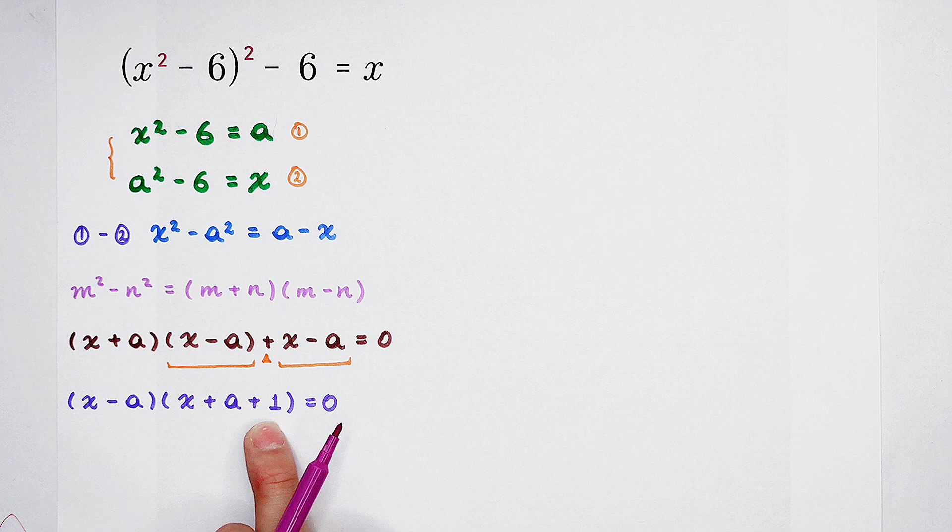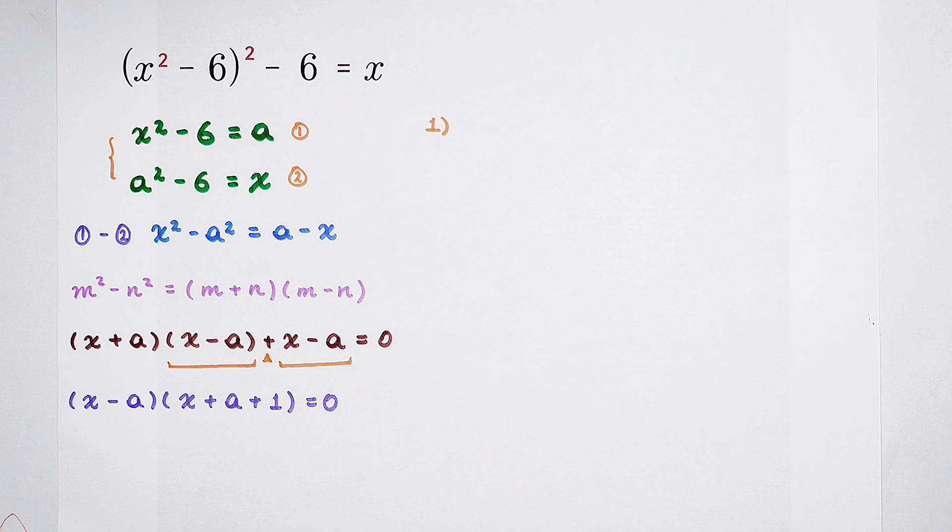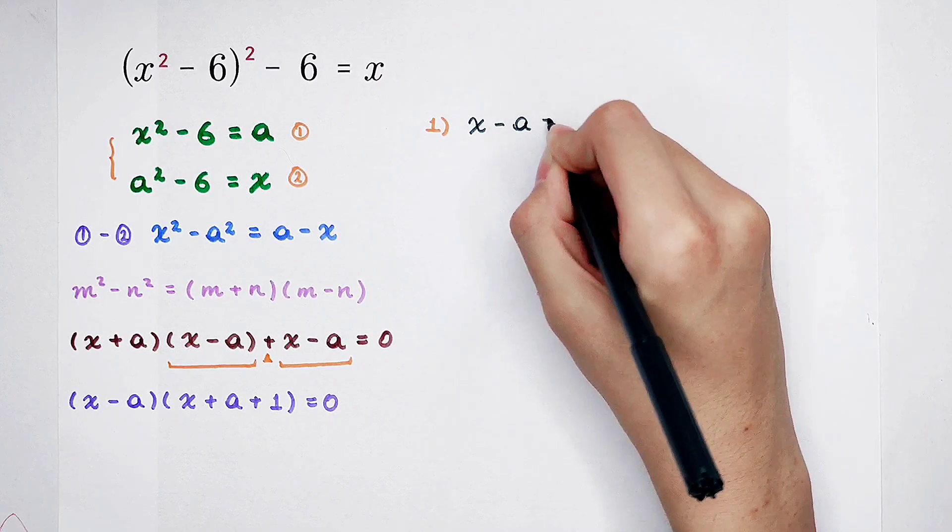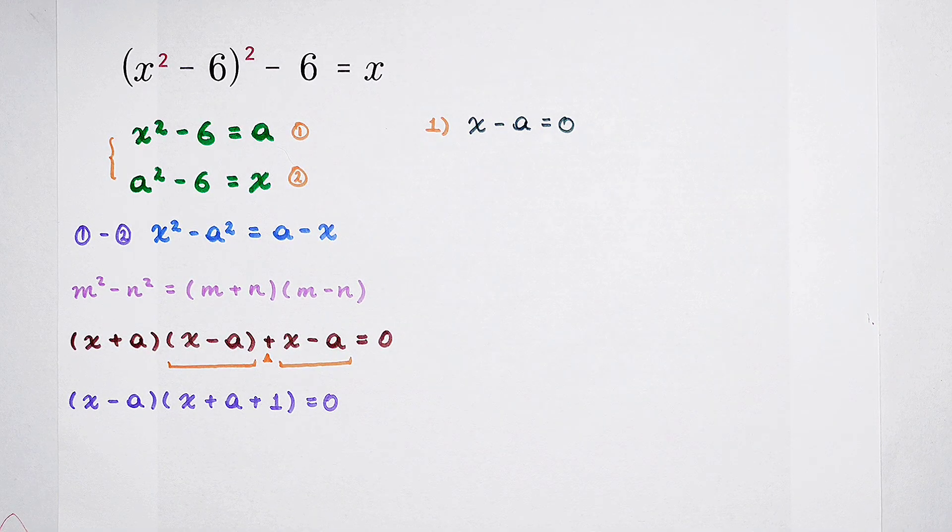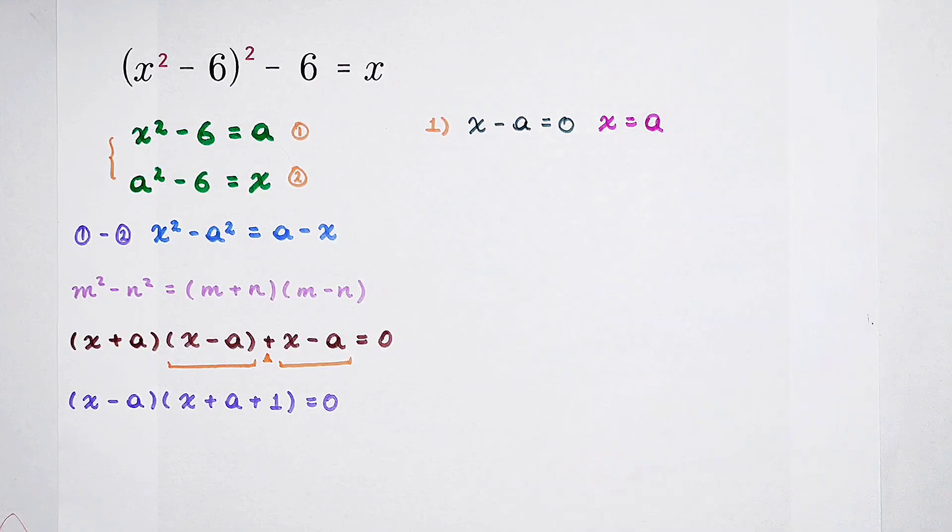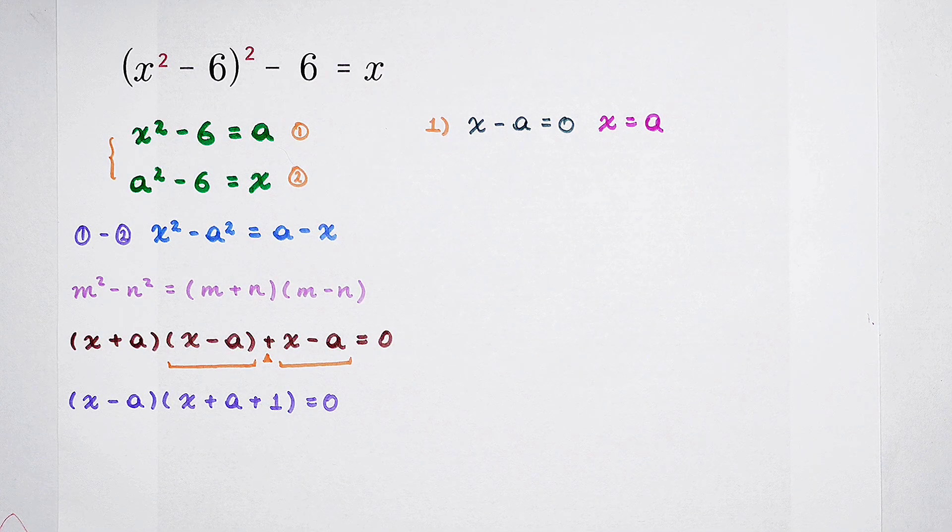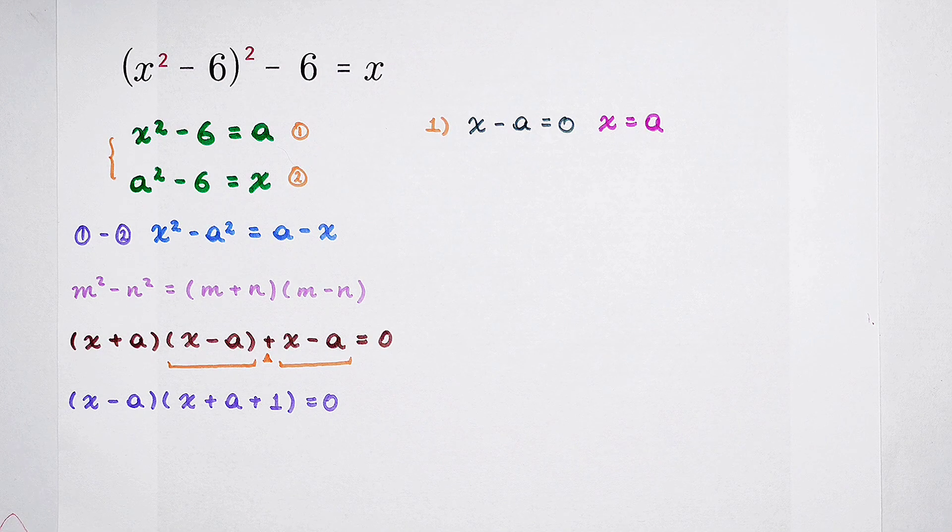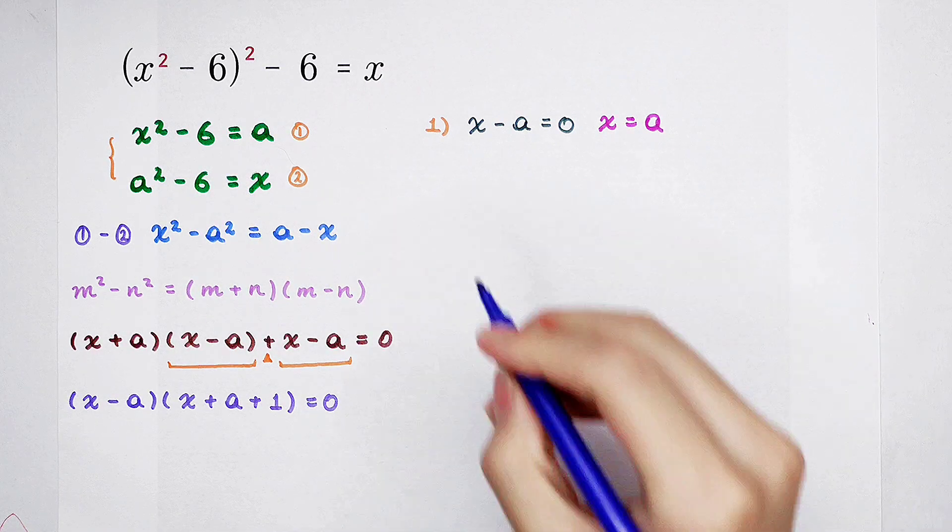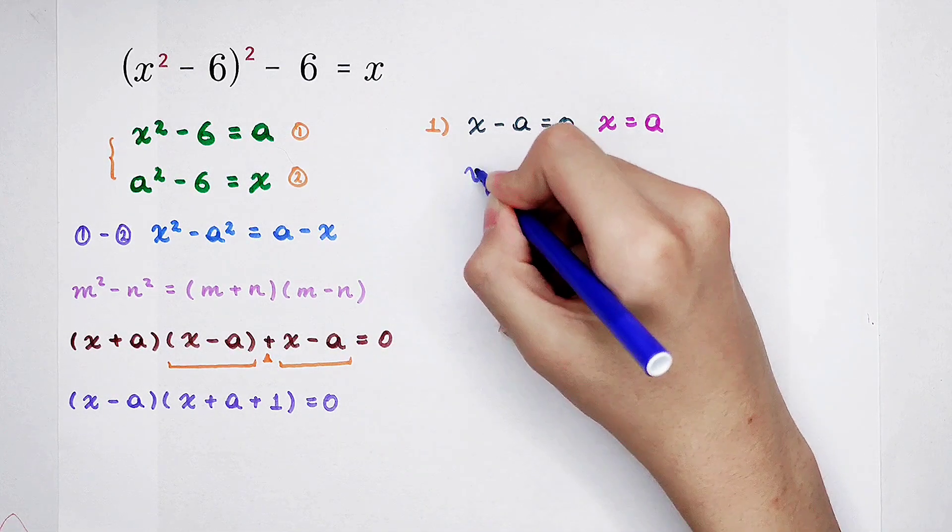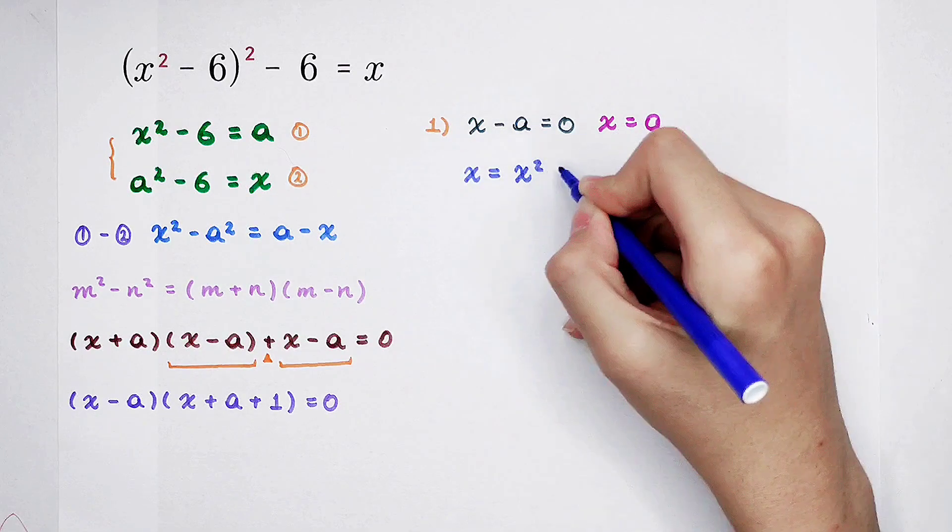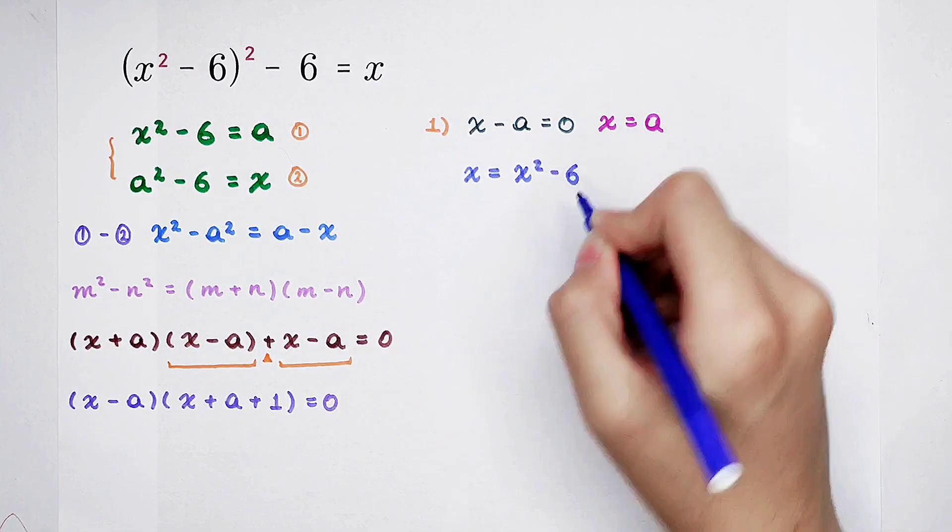So it can be zero, or this guy is zero. First, when x minus a equals zero. So x is equal to a. Don't forget. What is a? x squared minus 6. We've let it be a. So of course, x is equal to x squared minus 6.